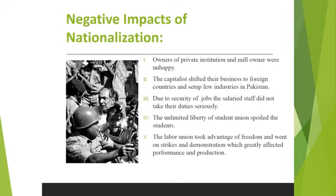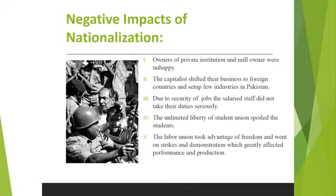Negative impacts: owners of private institutions and mill owners were unhappy. Capitalists shifted their businesses to foreign countries and set up few industries in Pakistan. Due to job security, salaried staff did not take their duties seriously, increasing the financial burden on the government. The unlimited liberty of student unions spoiled students. Political interference increased in educational institutions. Labor unions took advantage of freedom and went on strikes and demonstrations, which greatly affected the performance and production of units.